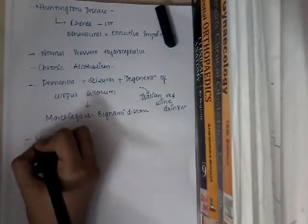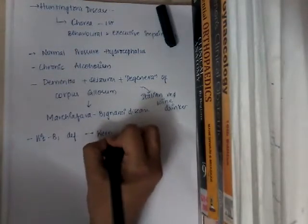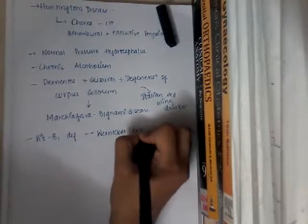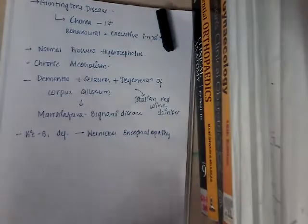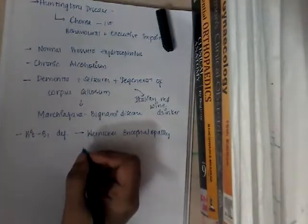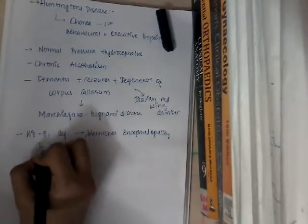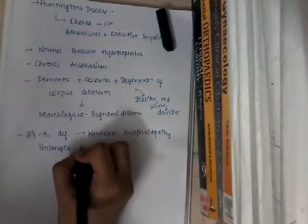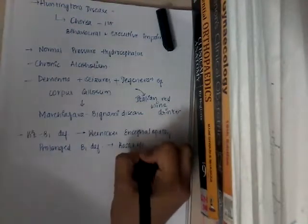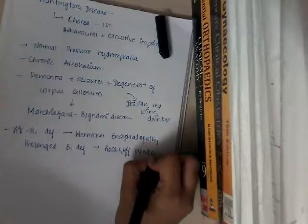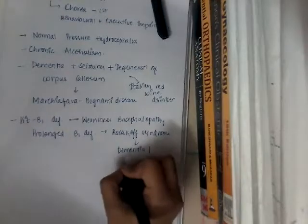Dementia is also seen in vitamin B1 deficiency, that is thiamine deficiency, which causes Wernicke's encephalopathy. We will learn the features of Wernicke's encephalopathy in its specific class. Then, whenever there is prolonged B1 deficiency, this leads to Korsakoff syndrome, where there is dementia or amnestic syndrome.